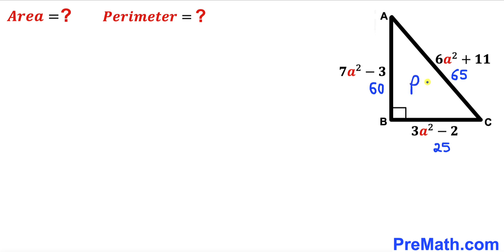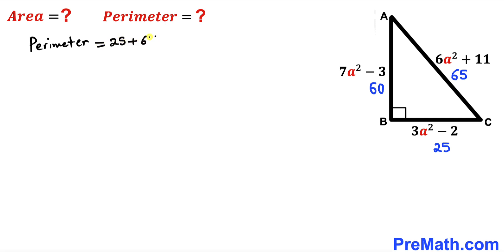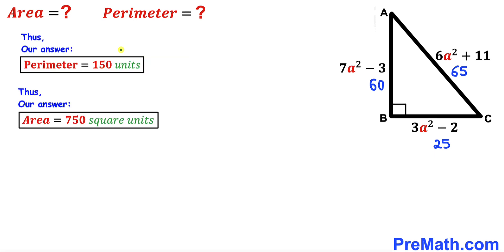Now we calculate the perimeter, which is simply the sum of all side lengths: 25 + 65 + 60 = 150 units. So the perimeter of this triangle is 150 units, and the area is 750 square units. That's our final answer. Thanks for watching — please don't forget to subscribe for more exciting videos!